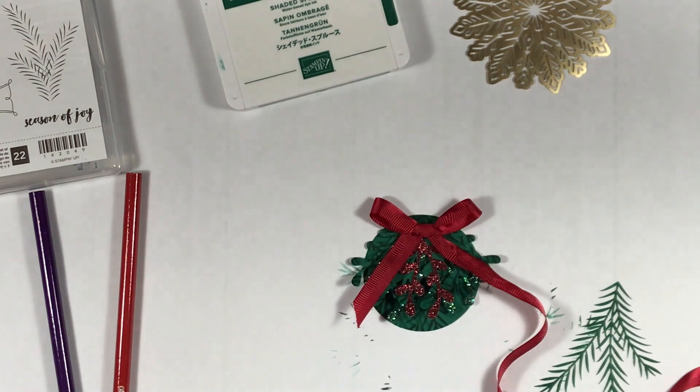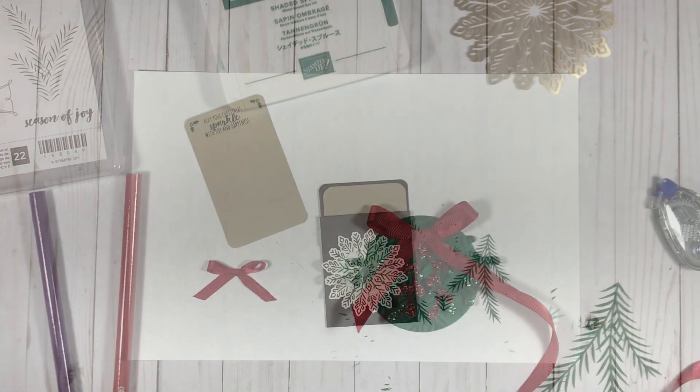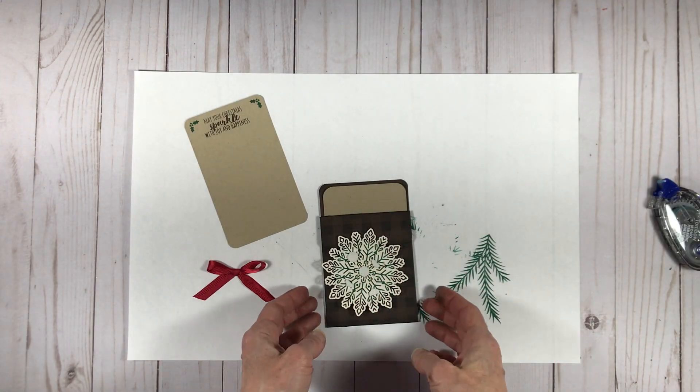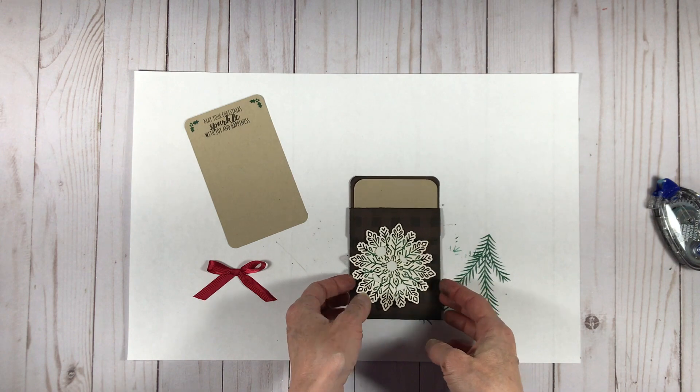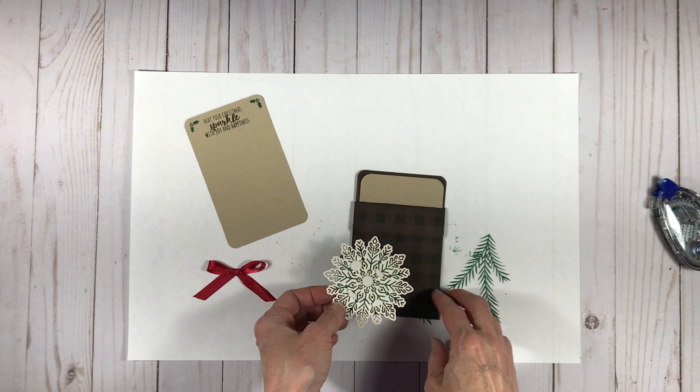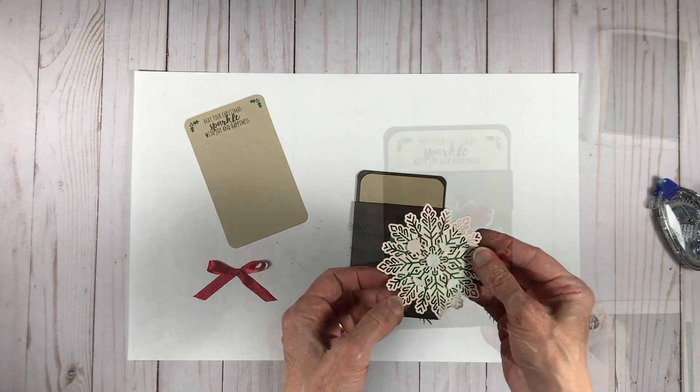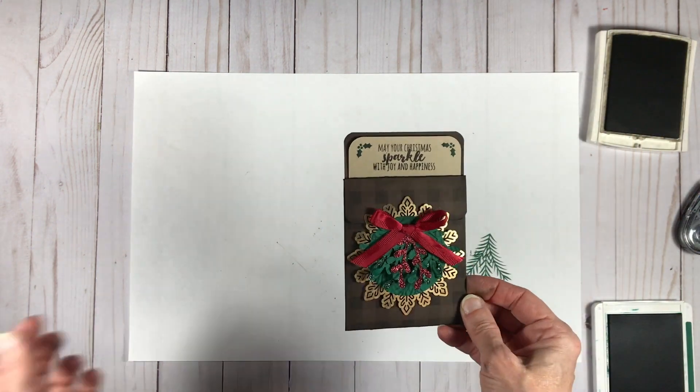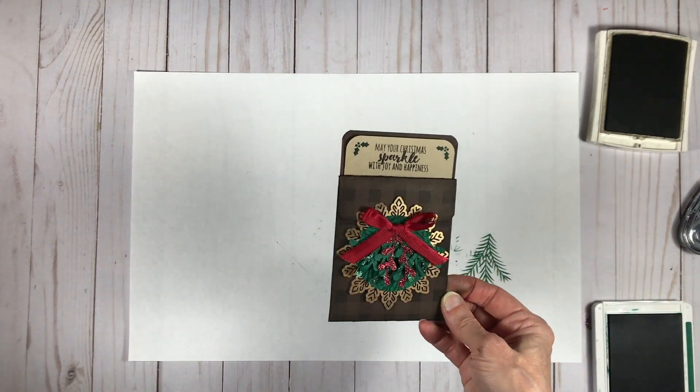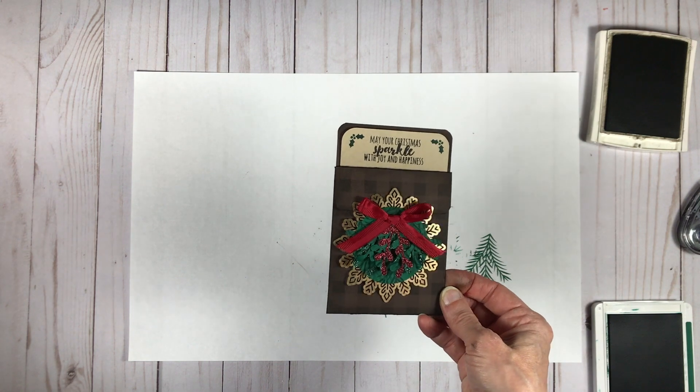Now I've used a gold snowflake doily as the base for my embellishment, and it is in fact retired but it worked perfectly so I had to go for it. I'm using dimensionals on the backside of it so it's raised up a little bit on the surface, and just attached my embellishment to the doily and I'm all set to go.